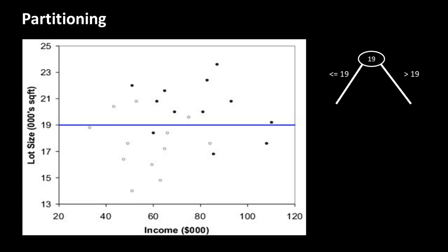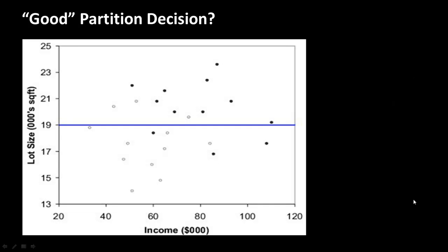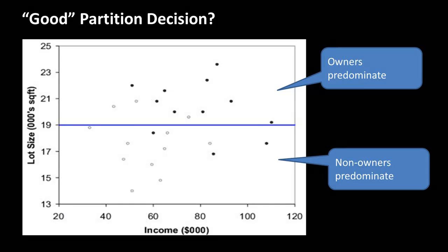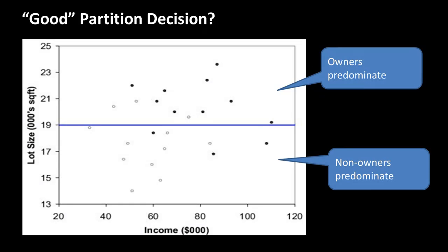Initially it was 50-50: 12 owners and 12 non-owners. After drawing the line, we've got one group here with nine owners and three non-owners, and the other group here with three owners and nine non-owners — significantly more homogeneous than before. This group has predominantly owners, and this group is predominantly non-owners. So yes, it seems to break the group into two much more homogeneous groups than the original entire group.